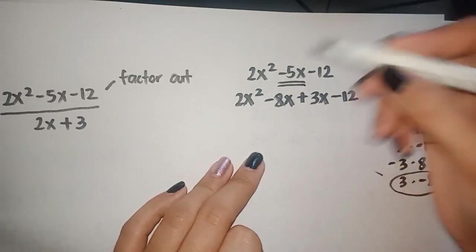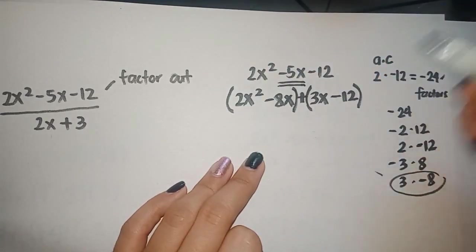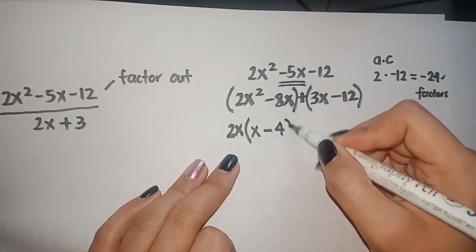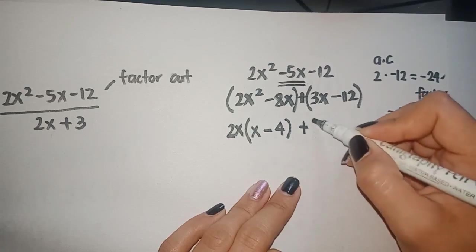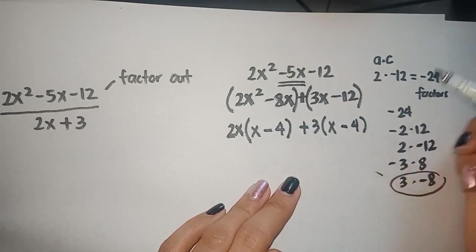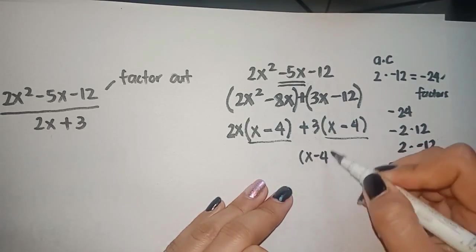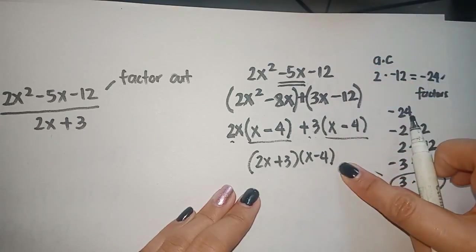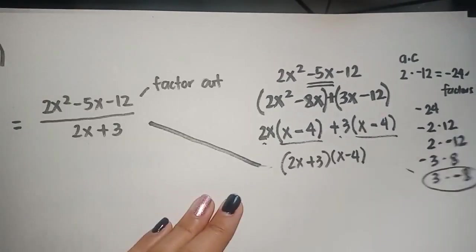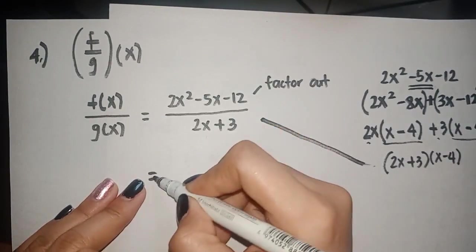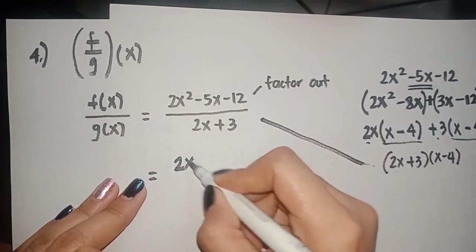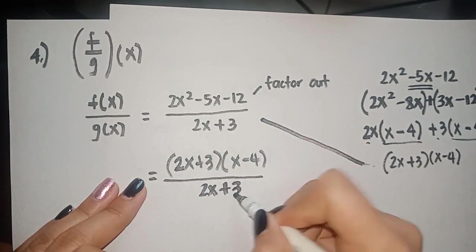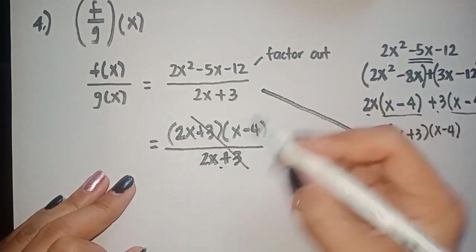So we have 2x squared minus 8x plus 3x minus 12. Now we have to group these polynomials. As you can see, we have common terms. We can find the GCF. The GCF is 2x, and we are left with x minus 4. Same process with the next one. The common factor is 3, and we are left with x minus 4. Now as you can see, we have common factors, and that is x minus 4 and 2x plus 3. So these are the factors of 2x squared minus 5x minus 12. Now let's rewrite that for our numerator. And as you can see, we have common factors. Now we can cancel that out.